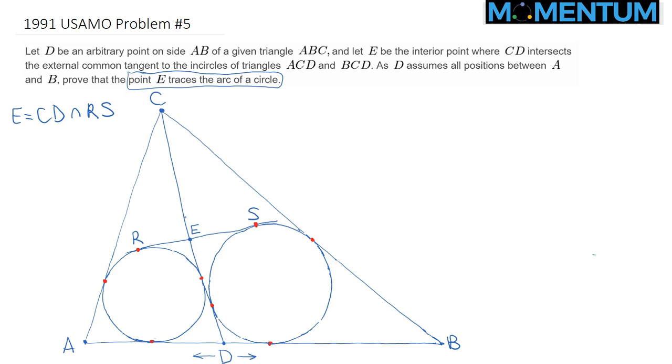So I need to express the radius of that circle, which is CE, in terms of something which is not changing in the picture, like the side lengths or the circumradius, or something like that. So that's our goal: to come up with an expression for CE.